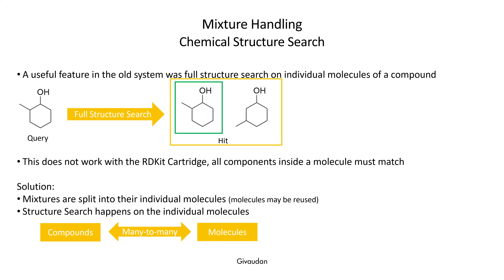Now to mixture handling. The old system had a nice feature: if you registered something with two or more components and did a full structure search, it would find everything containing what you drew as a single component — only one component needed to match. With Artkit, whether in the cartridge or Artkit itself, if you have an Artkit molecule and do a full structure search, all components must match. Since this feature was important, we had to make provisions in the database design. When you register a mixture, it gets split up into individual components in the back end, and searching happens on these individual components — essentially a many-to-many relationship between compounds and components.